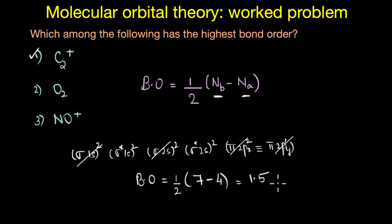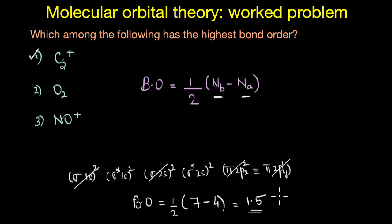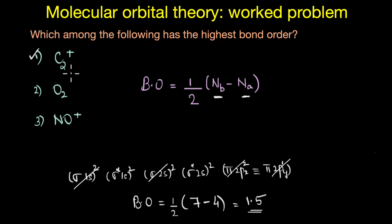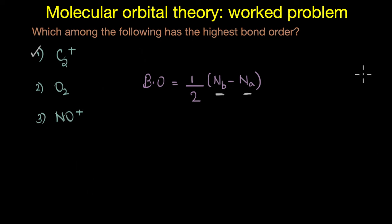A bond order of 1.5 means the two carbon atoms are held together by a bond stronger than a single bond but weaker than a double bond. This means the electrons in C2+ are delocalized over the entire molecule, as opposed to a normal covalent bond where the shared pair of electrons are mostly found in the region between the two atoms. This delocalization is one of the important features of molecular orbital theory, and this is why bond orders that are not whole numbers are allowed.